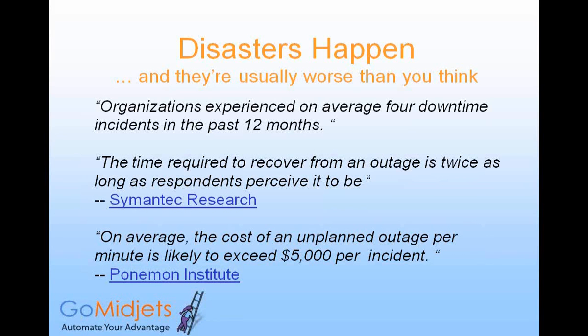This means that the technical experts who should know better underestimated the actual downtime by half. Take this into account when you estimate the risk for your organization. The Ponemon Institute estimates the cost of incidents to be over $5,000 per minute. That's a lot of cash.